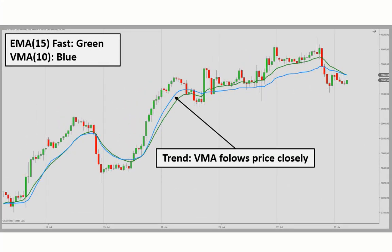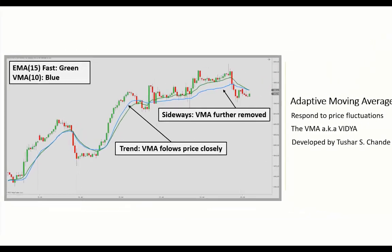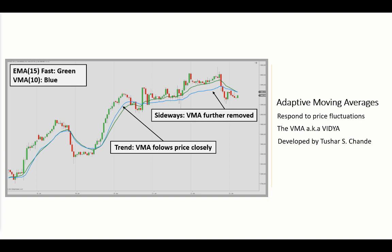So in high volatility scenarios, the VMA will use a large smoothing factor on a fast moving average, whereas in low volatility scenarios, a small smoothing factor is applied to a slow moving average. Comparing to the EMA — the exponential moving average — we see that the VMA moves closer to price during trending markets, whereas it's further removed in sideways scenarios.